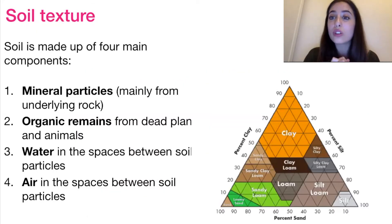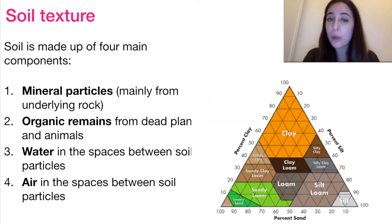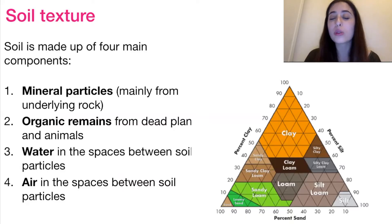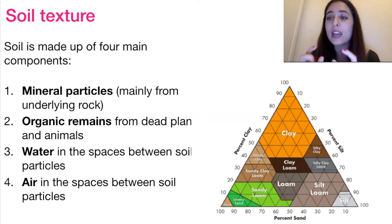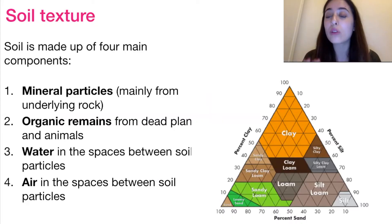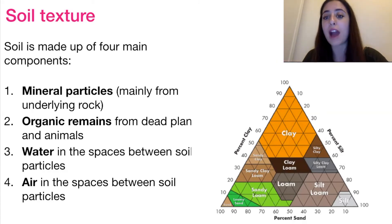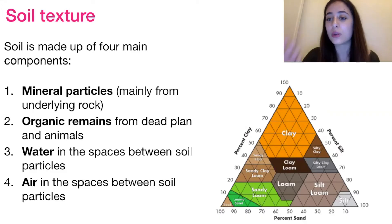So now let's move on to soil texture. Soil is composed of four main components: mineral particles, organic remains, water, and air. The mineral particles are mainly from underlying rocks, organic remains come from dead plants mainly, and then water and air in the spaces between the pores. On the right here, I have a triangle about soil composition. The IB want you to be able to read off what exactly the consistency of a sample of soil would be. On the left we have percent clay, at the bottom percent sand, and on the right percent silt, and you literally just read it off with a ruler like that.